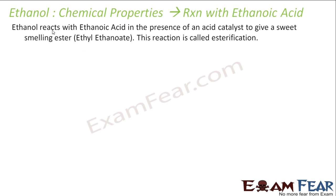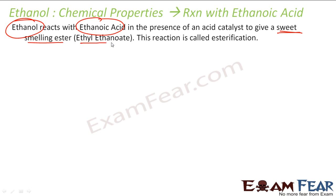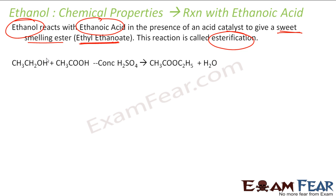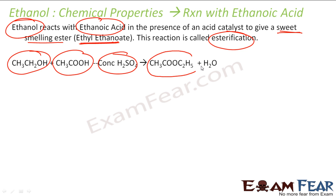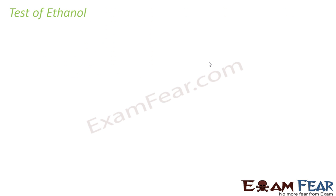The last reaction is the reaction of ethanol with ethanoic acid. Ethanol reacts with ethanoic acid to give a sweet-smelling ester called ethyl ethanoate, and this reaction is called esterification. You have ethanol and ethanoic acid, add some sulfuric acid, and you get the ester ethyl ethanoate plus water. So when you add alcohol with an acid, you get a sweet-smelling substance called an ester, and this process is called esterification.